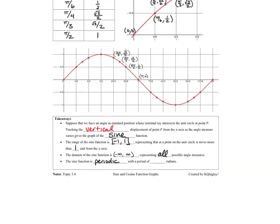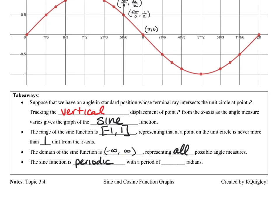Looking back at these takeaways for the sine function, the one that you may not have filled in is the very last line of the very last takeaway. It says that the sine function is periodic with a period of—and we talked about this in section 3.1 when we talked about periods of a function. So how long does it take for the shape to repeat?